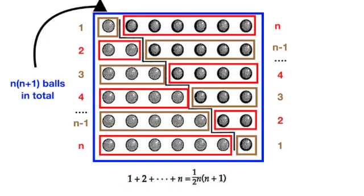Since we have n rows and each row has n plus 1 balls each, we see that that's the total of n times n plus 1 balls. The number of balls must remain the same no matter how we choose to add them up together.